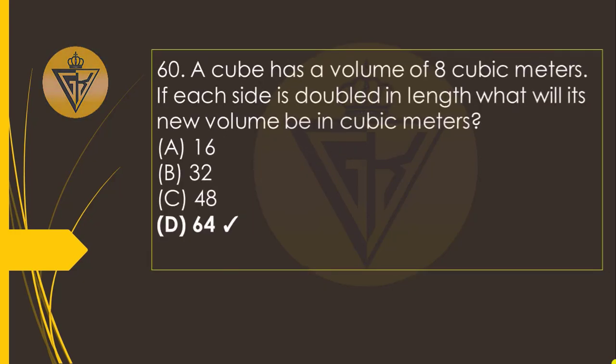A cube has a volume of eight cubic meters. If each side is doubled in length, what will its new volume be in cubic meters? The option D: 64.